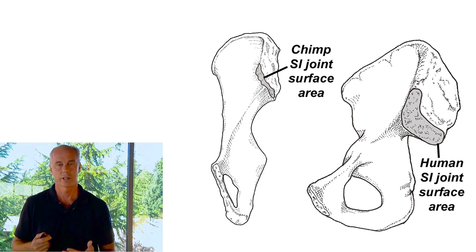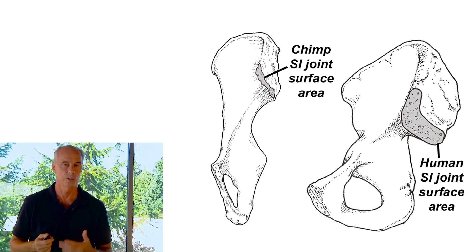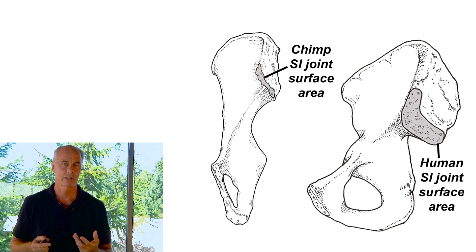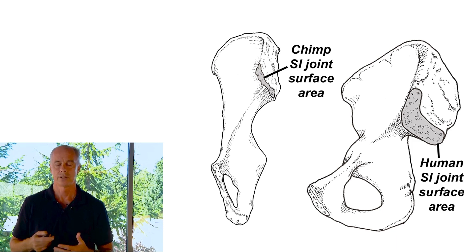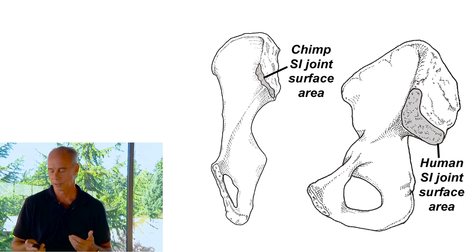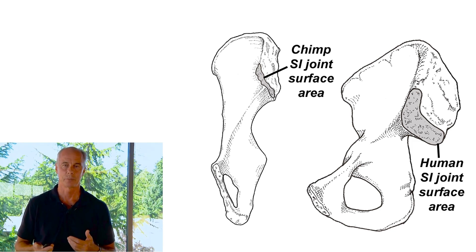The clinical implication is that older runners rarely have sacroiliac problems. Anybody over 60, even if they have cartilage there, that joint's not moving — so look for other things: lumbosacral, piriformis, or myofascial causes.